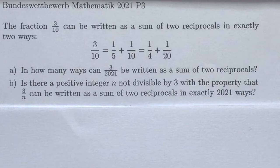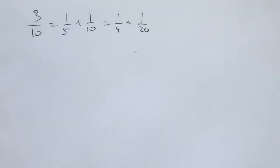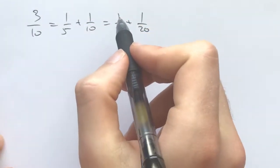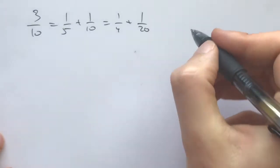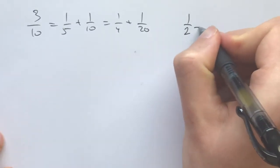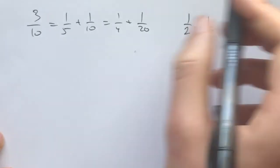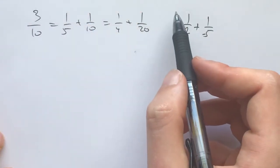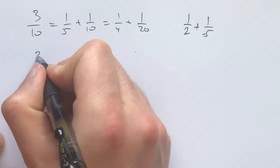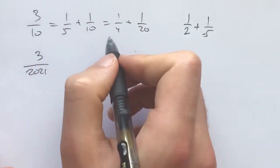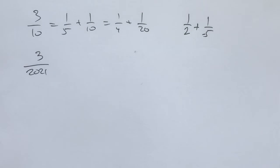If you'd like to go along with us, I suggest you take a preliminary look of 10 minutes and try to solve the problem, or at least push it as far as you can. So the problem says: 3/10 can be written as a sum of reciprocals in two ways. Given that we're not writing them with negative integers, we're just looking at positive integers. The question asks: in how many ways can 3/2021 be written as a sum of two reciprocals of natural numbers?